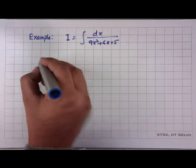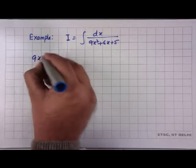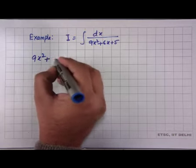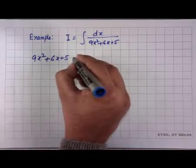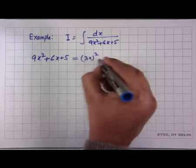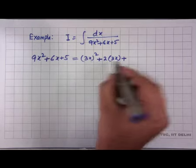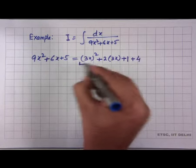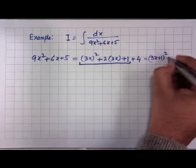Initially you should solve problems the way we derived them. However, once familiar, you can take shortcuts. For 9x²+6x+5: notice this is (3x)²+2·(3x)·1+1² = (3x+1)². Since 5 = 1+4, we can write 9x²+6x+5 = (3x+1)²+4.